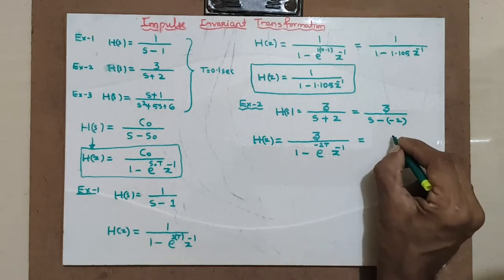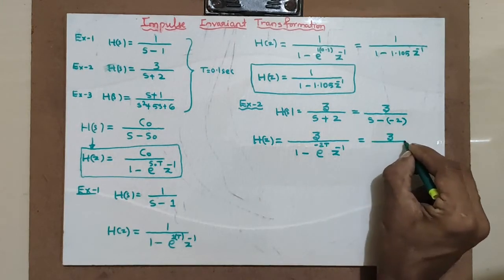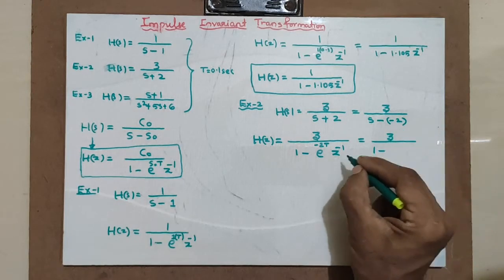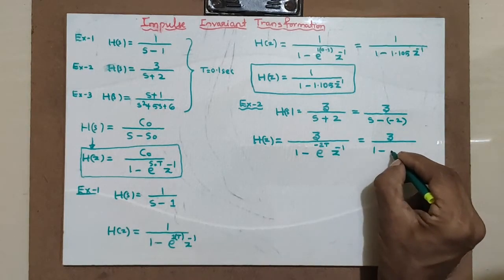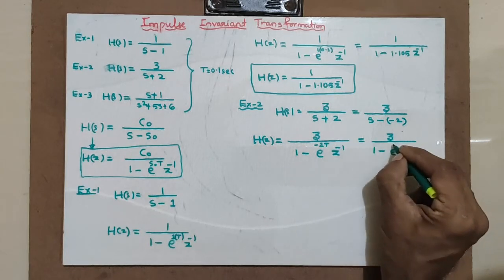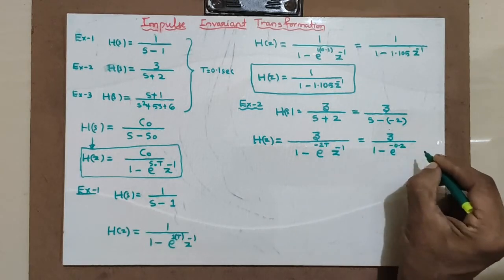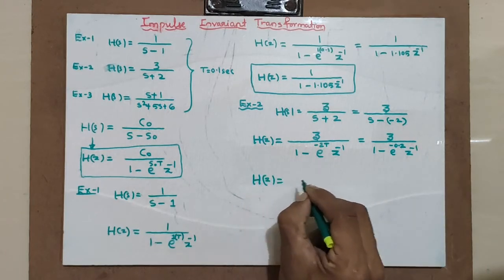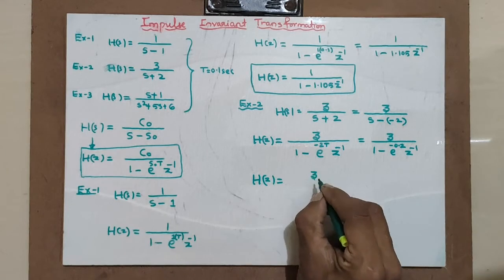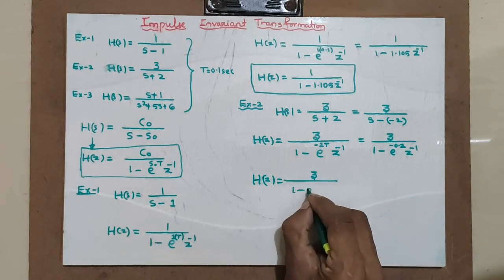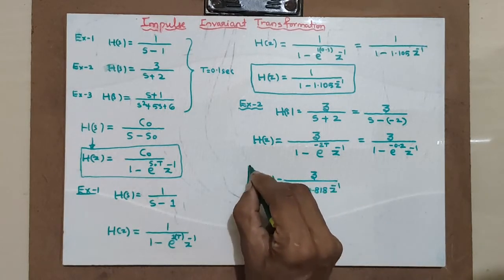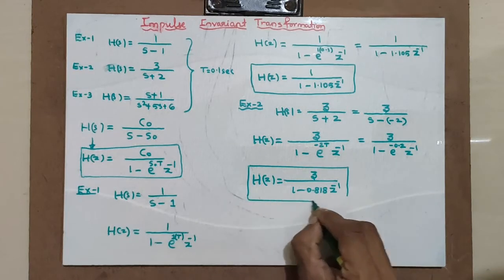That equals 3 divided by 1 minus e raised to minus 0.2 (since T is 0.1), times z raised to minus 1. Using a calculator, e raised to minus 0.2 is 0.818. Hence H(z) becomes equal to 3 divided by (1 minus 0.818 z raised to minus 1). This is the Example 2 solution.